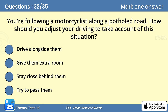Question 32. You're following a motorcyclist along a potholed road. How should you adjust your driving to take account of this situation? The answer is C: Give them extra room. Good forward planning can help you keep other road users out of trouble. Watch for clues — for example, a motorcyclist taking a lifesaver look over their shoulder could be about to change direction.